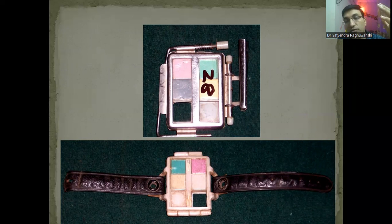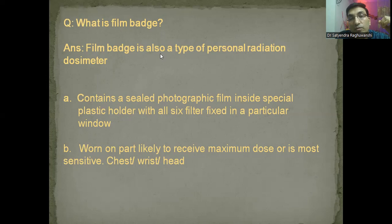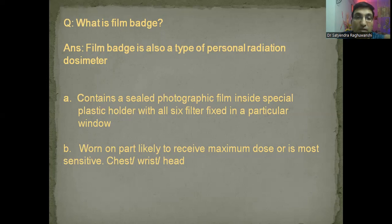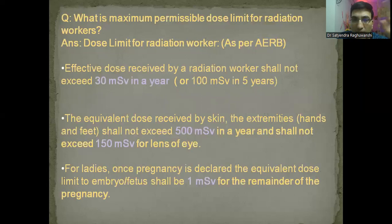Some candidates say 'sir, this is a wrist TLD badge' but it is actually a film badge. What is a film badge? It is a radiographic device for personal radiation monitoring. It is a conventional type of device with a sealed photographic film inside a special plastic holder and six filters. It can be used on the chest, wrist, or head level. What are the other kinds of radiation dosimetry devices? Film badge, pocket ion dosimeter, electronic dosimeter, or OSL — optically stimulated luminescence dosimeter.